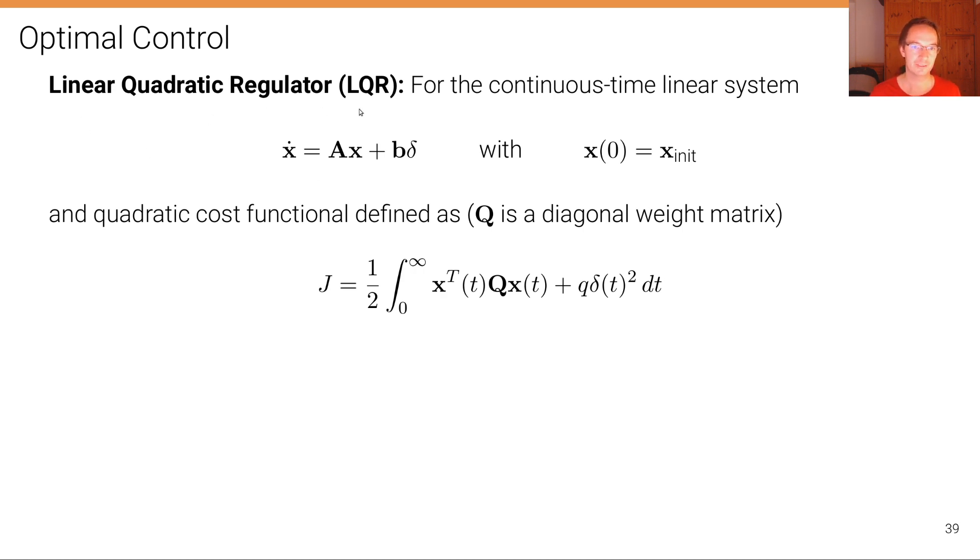Given such an equation, the so-called Linear Quadratic Regulator or LQR, which is one of the most common forms of optimal controllers, given this continuous linear time system with some initial condition x(0) equals x-init.